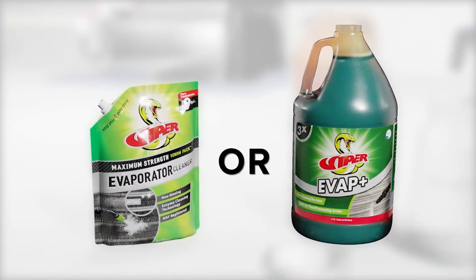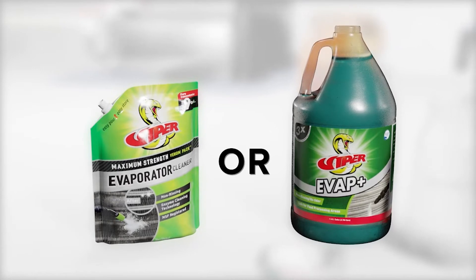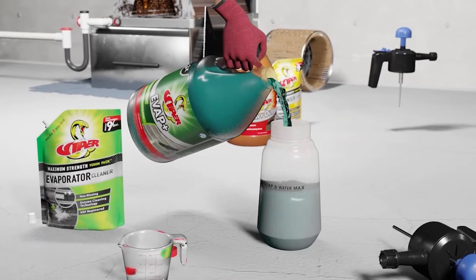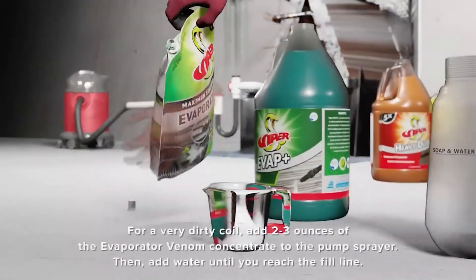In the case shown, for evaporator in-place cleaning, you can choose the Evaporator Venom Pack cleaner or Evap Plus. As we mentioned before, Evap Plus does not require dilution and can be poured directly into the pump sprayer.